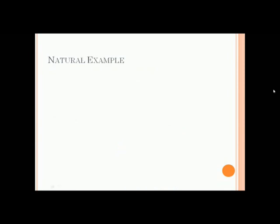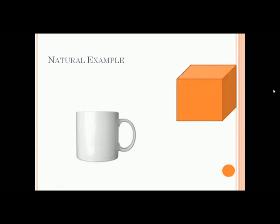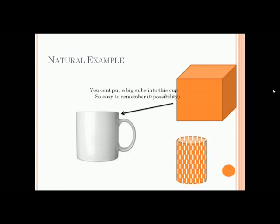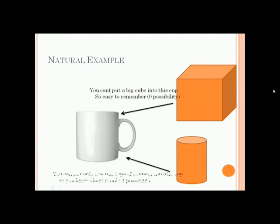Consider filling a cup with something. As we can see, this large cube cannot be put into this cup. So here, possibility is 0. In the second one, if we take a cylinder same size as the cup, we can put exactly one instance of the cylinder like that into the cup.